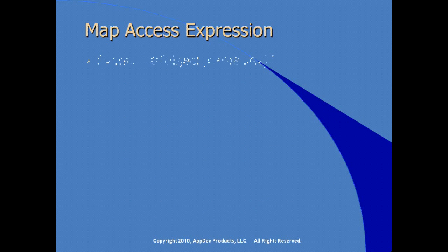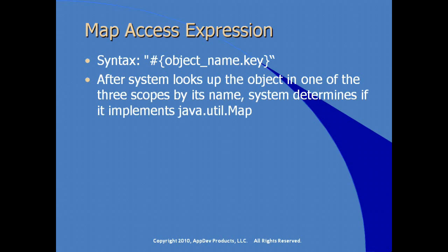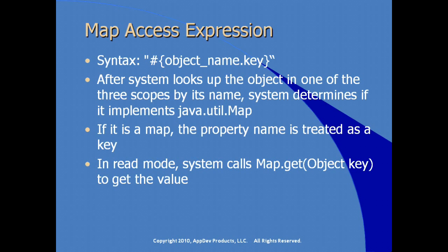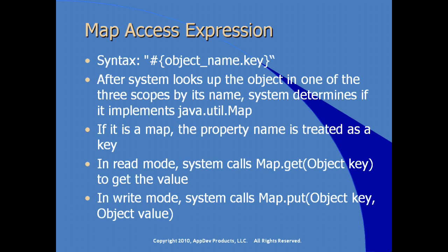If you're accessing a map using the expression language, the syntax generally looks like object name dot key value. After the system looks up the object by its name, it determines if the property implements java.util.Map. If it is a map, the property name is treated as a key within that map. In read mode, the system calls the get method of the map object; in write mode, it calls the put method, using the key value and looking for the value from the request parameter.